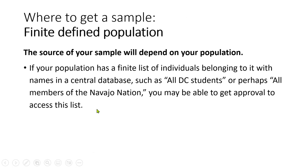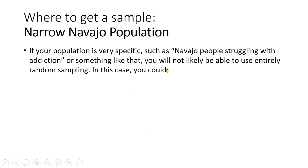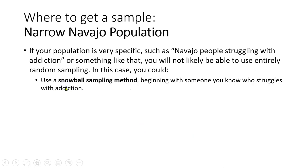Where do you get your sample? That depends on your population. If you have a finite list — say Titania could get a list of all those children in grades 2 through 4 identified with a mild disability, and the school district found the work important enough to allow access — you could draw from that list using random sampling. But if your population is more narrow, like people struggling with addiction, you might not be able to use random sampling and could instead use snowball sampling — starting with someone you know and having them refer you to others until you get enough participants.